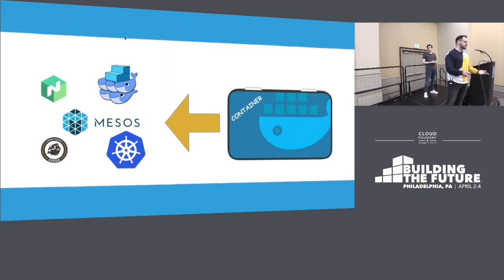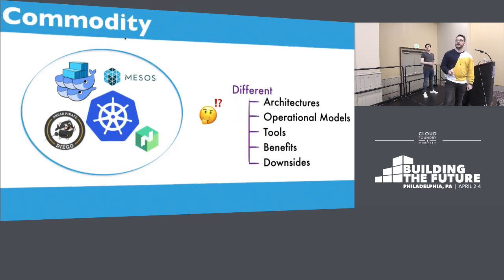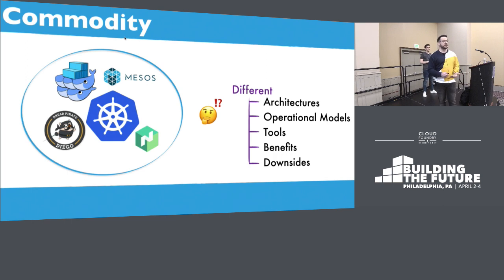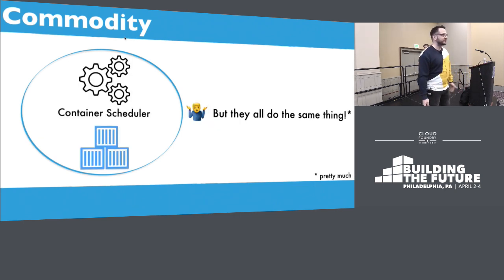It's not as easy as a lunchbox where you just decide you want to eat in the park. Here, this is computers, and computers are hard. You have to make a decision, and it is a hard decision because container orchestrators are different in the architecture, in the operational model, in their tooling. They have different benefits and different downsides. But at the end, they all do the same thing — they're just container scheduling.